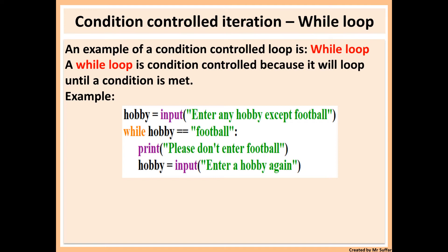For example, in this code, we're asking for hobby first. Then we're saying while the hobby is equal to football. So as long as the hobby is football, the loop will happen. If the condition is true, the loop will happen. If it's false, it will not happen. This will keep repeating as long as the user types football — it will display 'please don't enter football', then ask for a hobby again, and keep doing it until the user types anything other than football. With this, you don't know how many times it's going to loop. Maybe it will loop once, maybe it will not loop at all. It's called condition-controlled because it will loop depending on that condition — you don't know the amount of loops; it depends on how the user uses it.